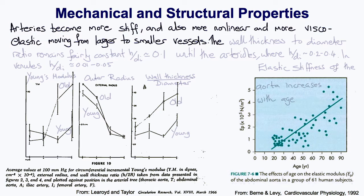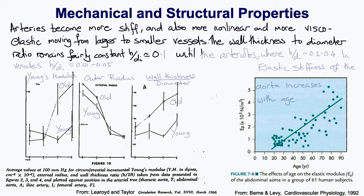The ratio of the wall thickness of the vessel to the diameter remains fairly constant at about 0.1 until we reach the arterioles, when it increases to about 0.2 to 0.4, because those are the resistance vessels with the larger amount of smooth muscle in their media. In the venules and veins, this ratio is smaller, as low as 0.01 to 0.05.